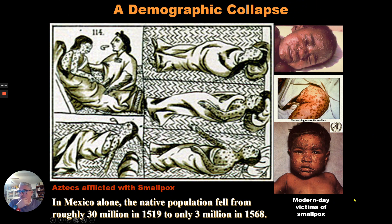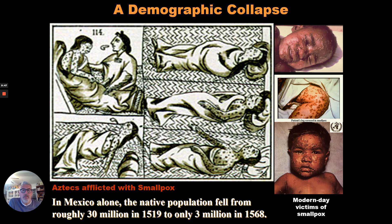This is smallpox — it looks awful. In Mexico alone, the native population fell from around 30 million people in 1519, when Hernán Cortés started his expedition through Mexico, to only 3 million left by 1568. That means it wiped out around 90% of the population of the Native Americans. Pretty awful things.